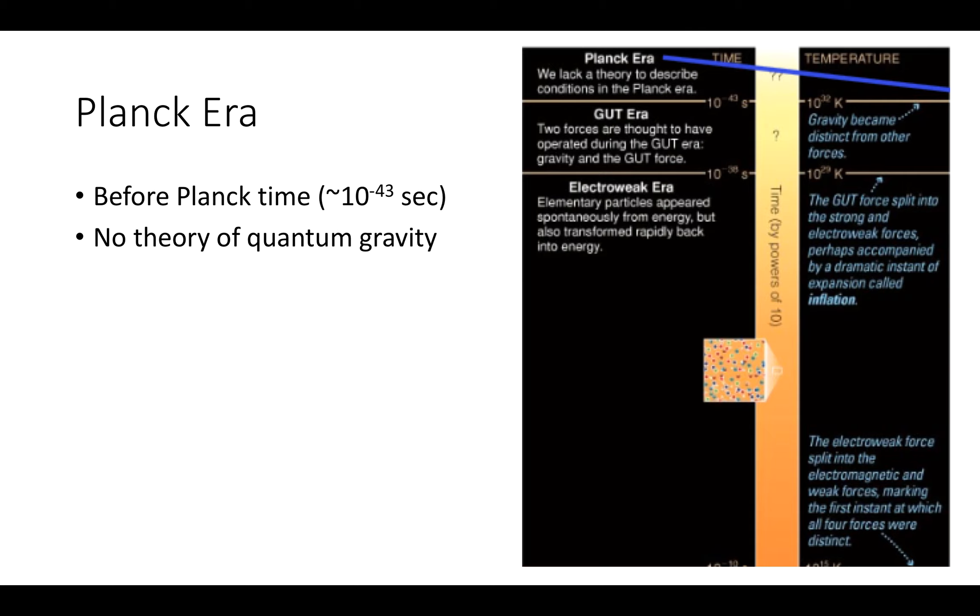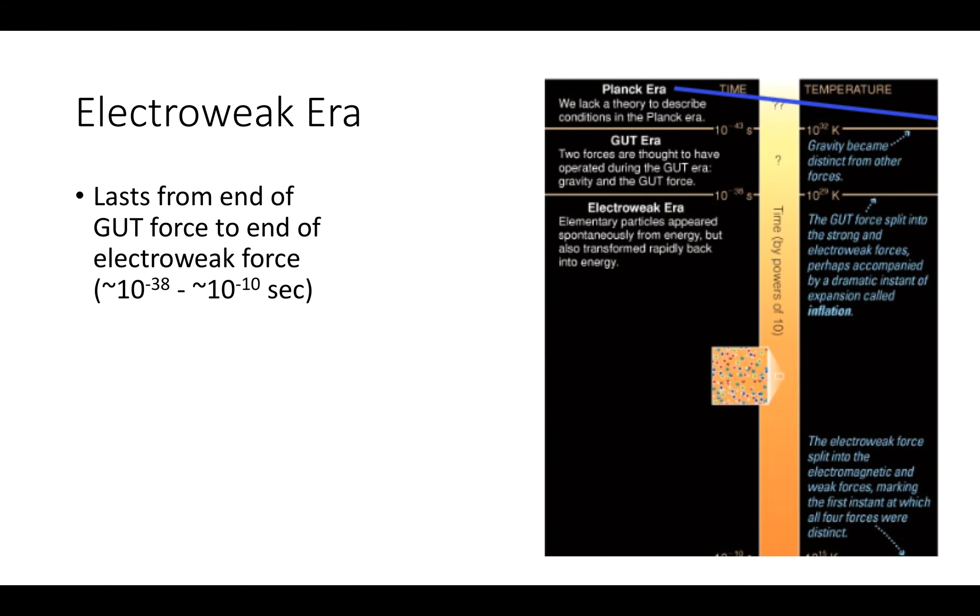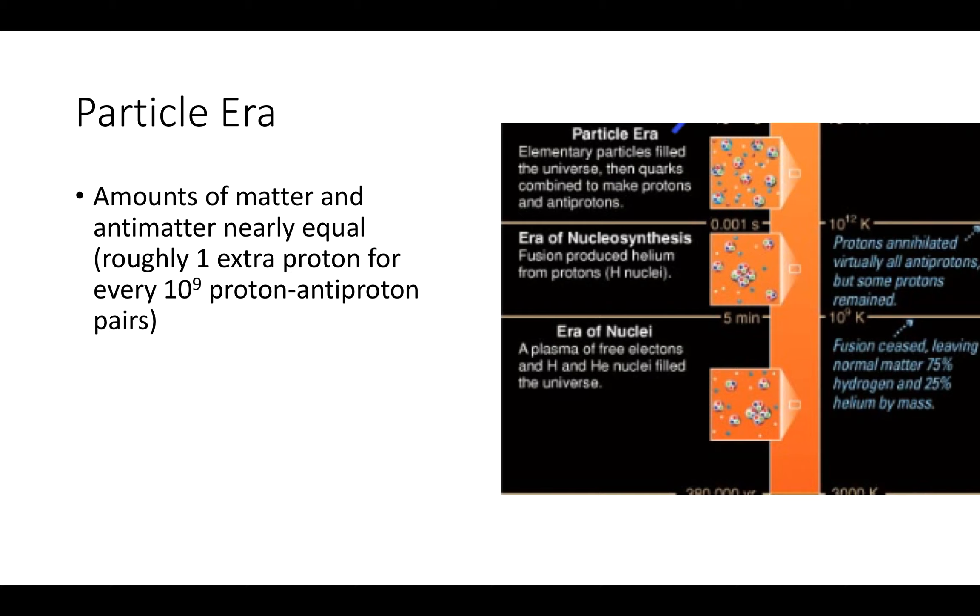Moving on to the gut era. So the gut era is when two forces operated in the universe, in this case gravity and the gut force. So it's unified here. Two forces are thought to have operated during this time. Now we have our electroweak era. So elementary particles appear spontaneously from energy, but also transform rapidly back into energy. Then we get our particle area where we start to get our elementary particles like quarks and protons and antiprotons. So amounts of matter and antimatter are nearly equal at this stage.